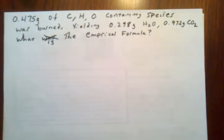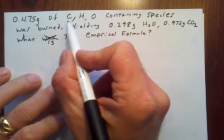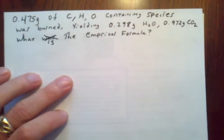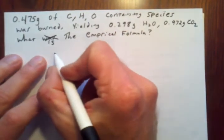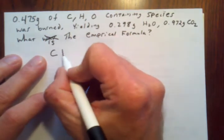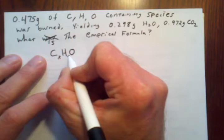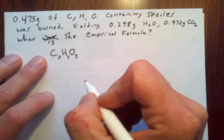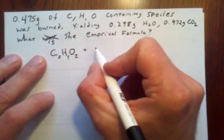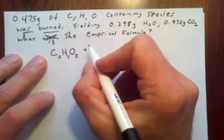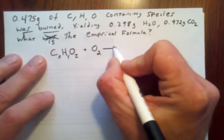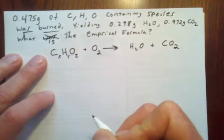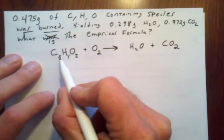So here we have a problem. We are trying to determine the empirical formula of a compound that contains carbon, hydrogen, and oxygen, and it's being determined by what's known as a combustion analysis. Combustion analysis means that our compound in question, which contains carbon, hydrogen, and oxygen, has an unknown formula — we're trying to figure out what x, y, and z are. In combustion analysis, we react it with oxygen, and it forms water and carbon dioxide. We can't balance this chemical equation because we don't know what x, y, and z are.